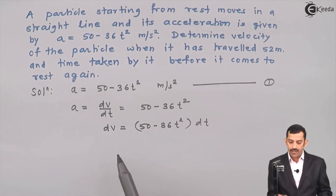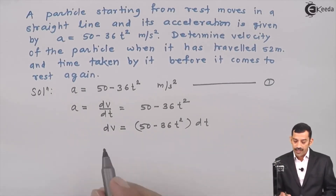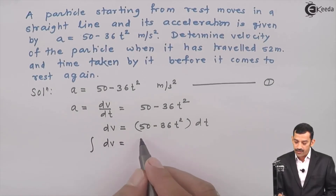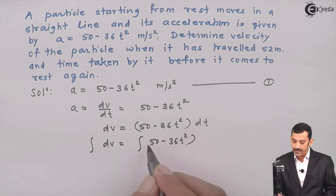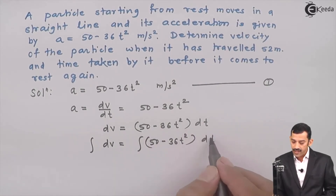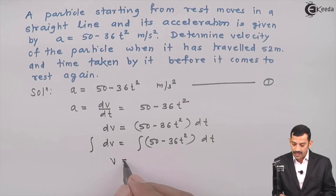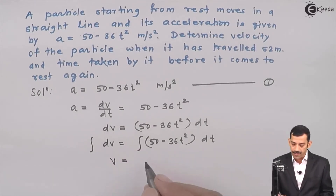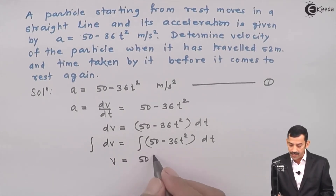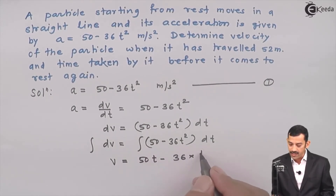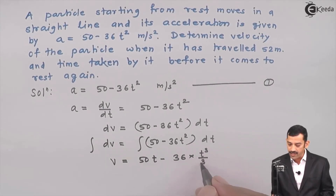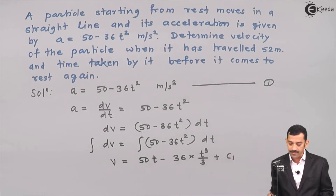Integrating both sides: the integral of dv = integral of (50 minus 36t²) dt. The left side gives v. On the right side, integral of 50 gives 50t, and integral of 36t² gives 36 × t³/3, plus a constant of integration C1. This gives the relation between velocity and time.